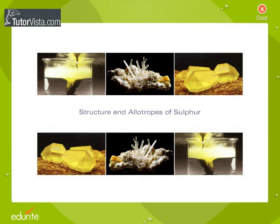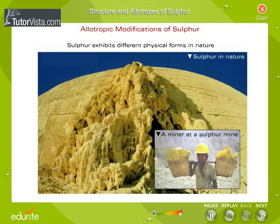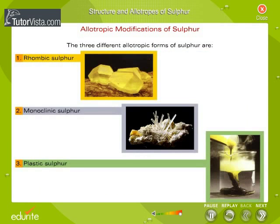Sulphur exhibits different physical forms in nature, which are called allotropes of sulphur. The three different allotropic forms of sulphur are rhombic sulphur, monoclinic sulphur, and plastic sulphur.